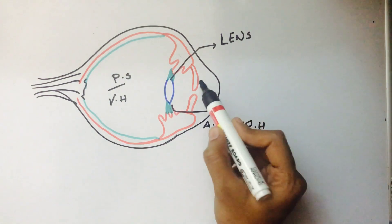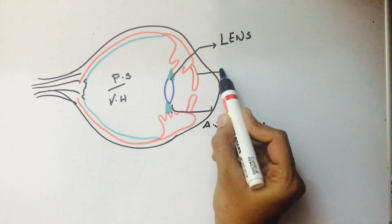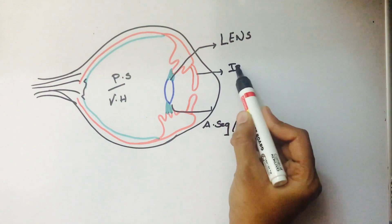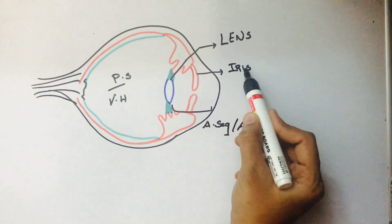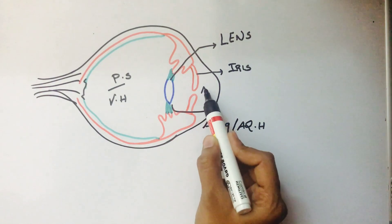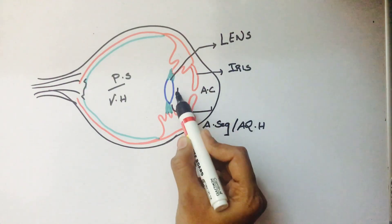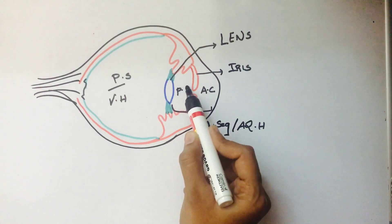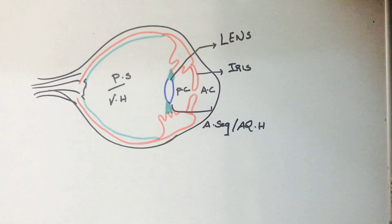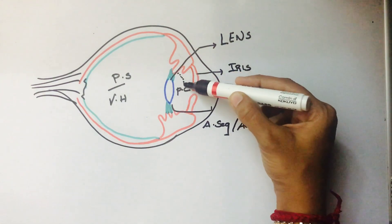The anterior segment is filled with aqueous humor. This structure is called the iris. The iris divides the anterior segment further into the anterior chamber and posterior chamber. Both these chambers are filled with aqueous humor.